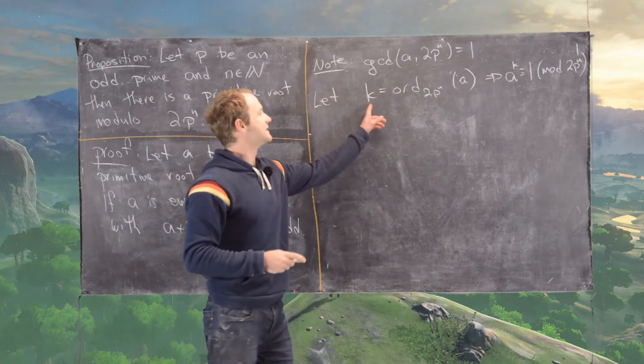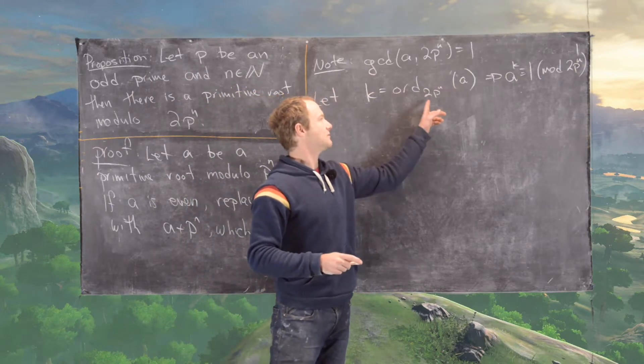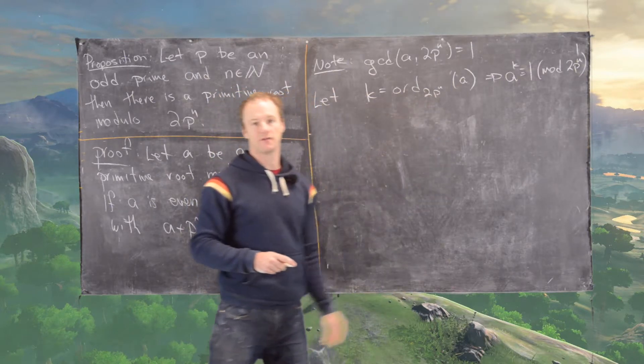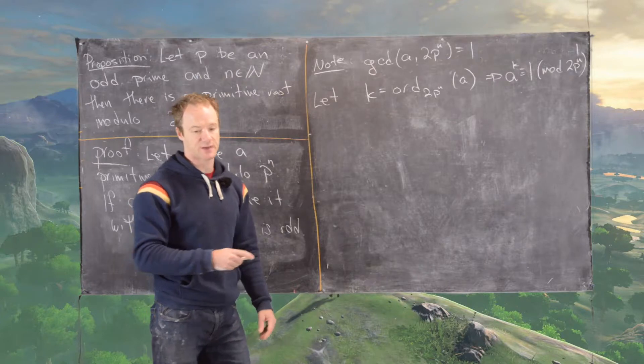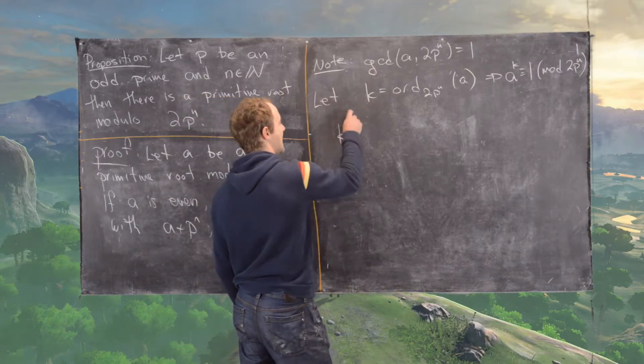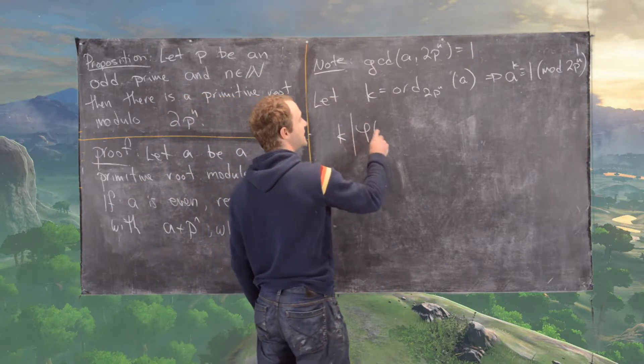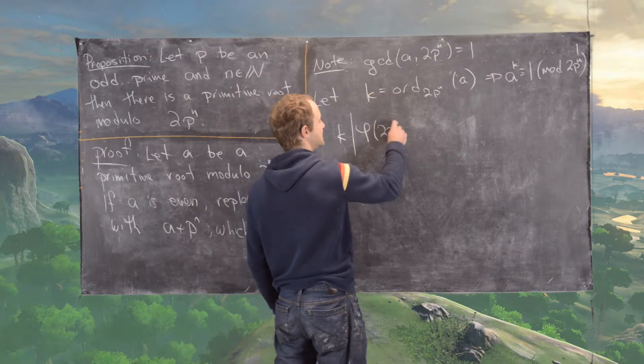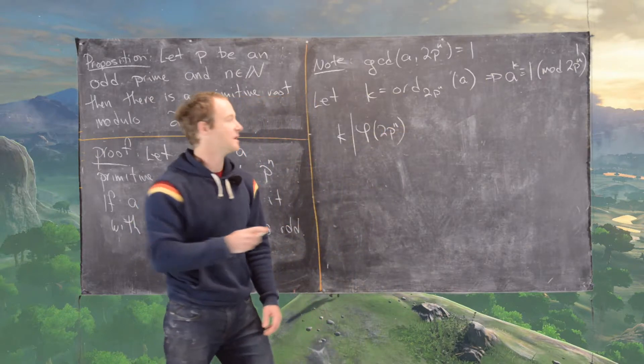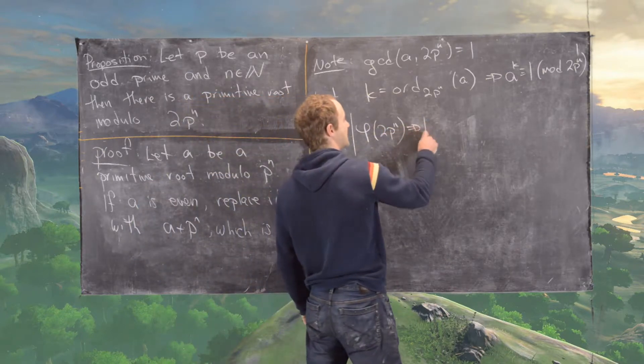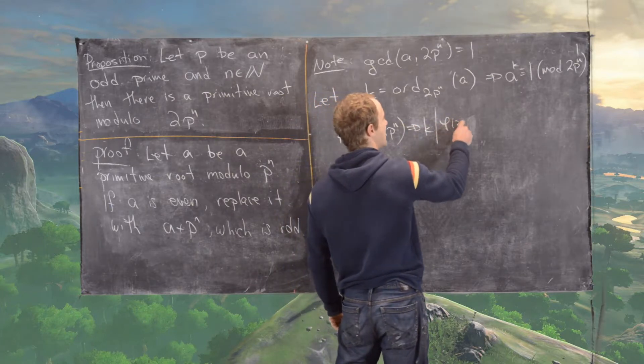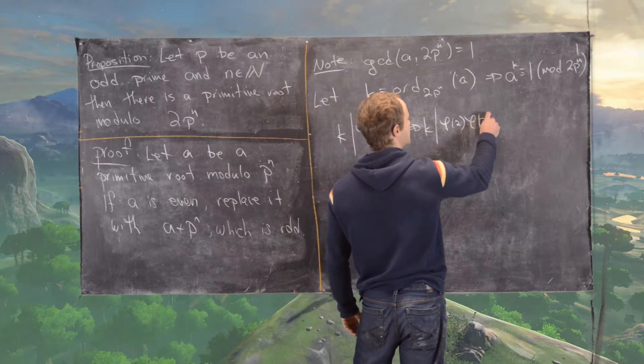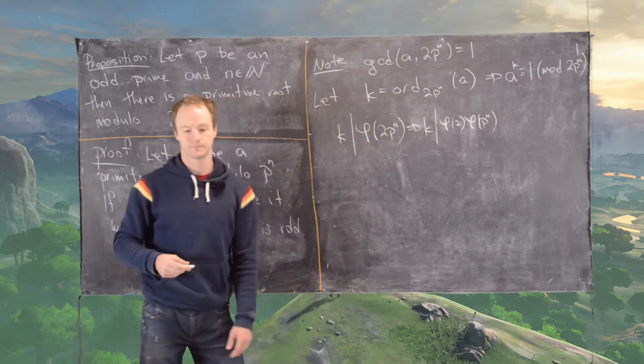Also notice that the order of any integer must divide phi of whatever you're working modulo with respect to. So k has to divide phi of 2p^n. But that's the same as saying k divides phi(2) times phi(p^n).